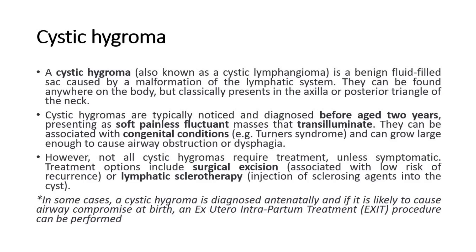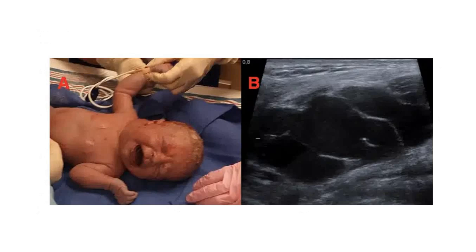Treatment options include surgical excision or lymphatic sclerotherapy, which is the injection of sclerosing agents into the cyst. In some cases, a cystic hygroma is diagnosed antenatally, and if it is likely to cause airway compromise at birth, an ex-utero intrapartum treatment procedure can be performed. This picture shows a newborn with a cystic hygroma at the neck and the ultrasound picture of it.